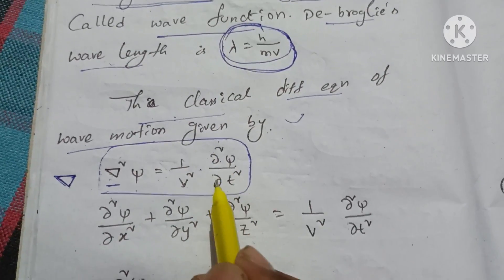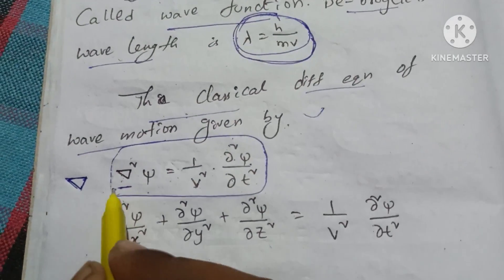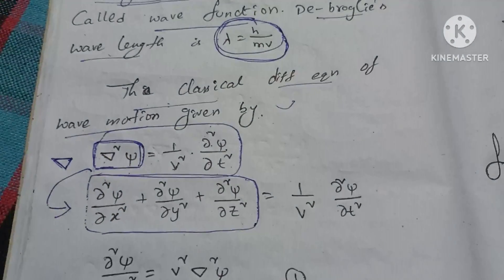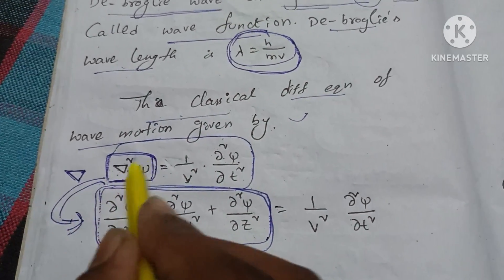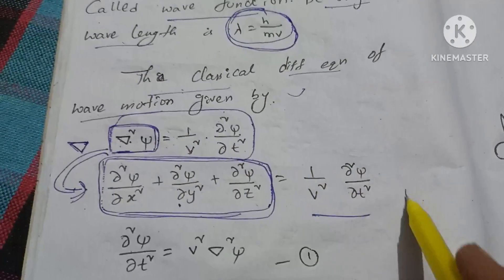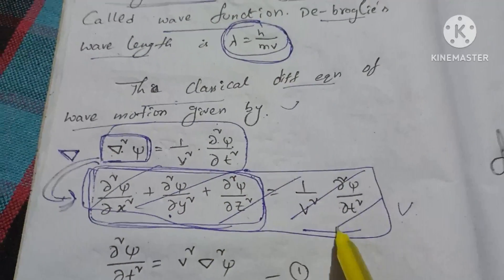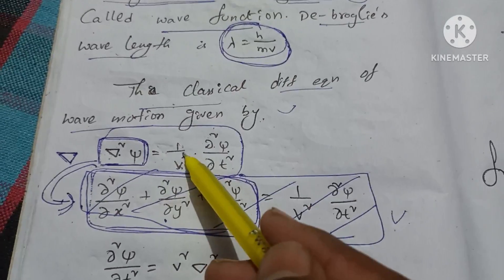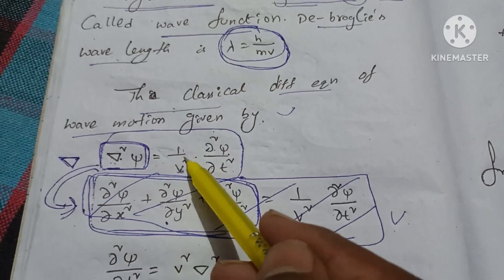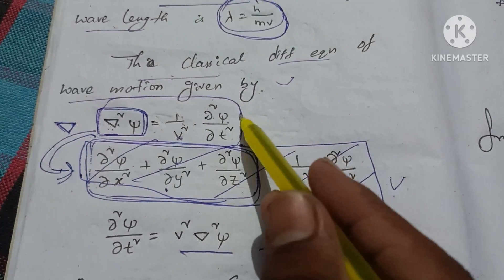Here the wave motion differential equation is given as: a·m into d²ψ/dt² = delta square psi. So this is the wave motion differential equation. We need to write delta square psi. This is one over v squared, multiply by v squared delta square psi equals delta square psi by delta t squared.